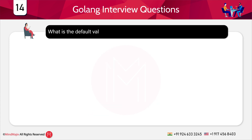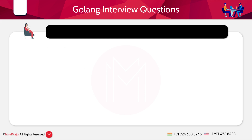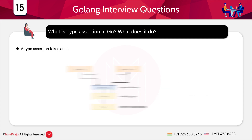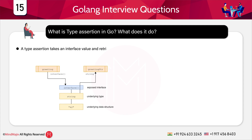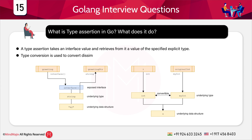What is the default value of type boolean in Go? The default value is always false. What is type assertion in Go? Type assertion takes an interface value and retrieves from it a value of the specified explicit type. Type conversion is used to convert similar types in Go, and within interfaces you can use different types through type assertion.